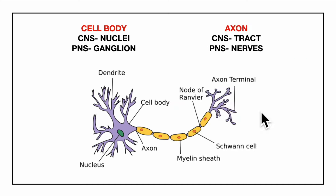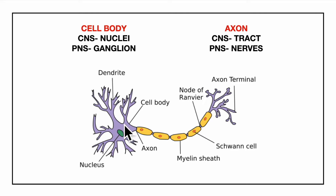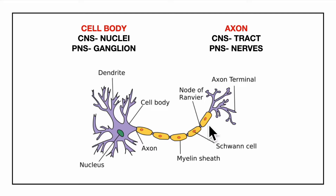Before learning about the internal structure, let's clarify white matter and grey matter. The unit of nervous tissue is the neuron, comprising the cell body, the axon, and the dendrites. A collection of cell bodies comprises the grey matter. In the CNS, collections of cell bodies are termed nuclei; in the peripheral nervous system, they are known as ganglia. A collection of axon bundles in the CNS is known as a tract, and in the PNS, collections of axons are known as nerves.